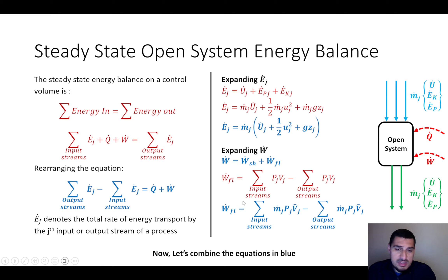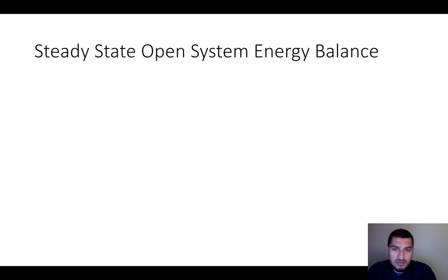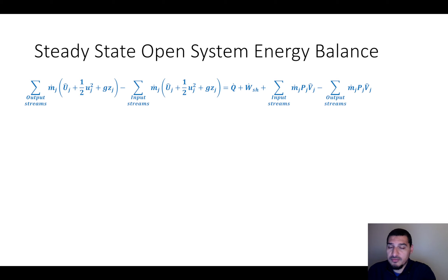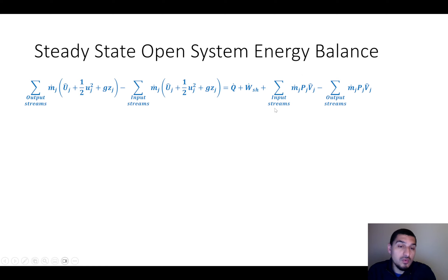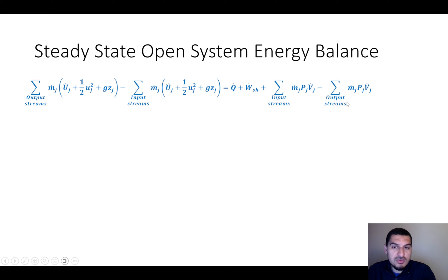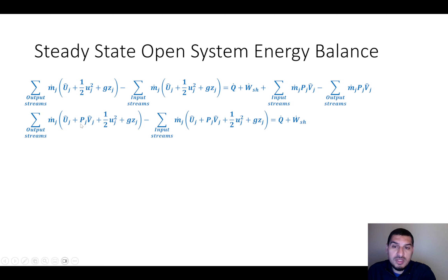Substituting these expanded forms into the equation, the rest is mathematics — we rearrange to get a simplified form. The summation of energy output minus summation of energy input equals Q plus shaft work plus flow work. Taking common factors and moving terms, the equation becomes: u-hat plus pv-hat plus half v-squared plus gz for output streams, minus the same for input streams, equals Q plus shaft work.